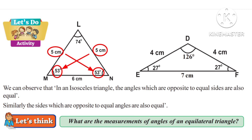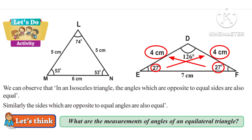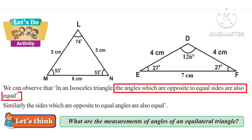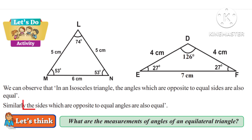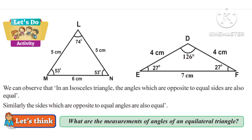Now let us take another triangle. Triangle DEF is also an isosceles triangle in which we observe two equal angles: angle E and angle F are both equal to 27 degrees. Now observe the sides opposite to those equal angles are of equal length — DE and DF are both equal to 4 cm. We can conclude that angles which are opposite to equal sides are also equal. Similarly, the sides which are opposite to equal angles are also equal.